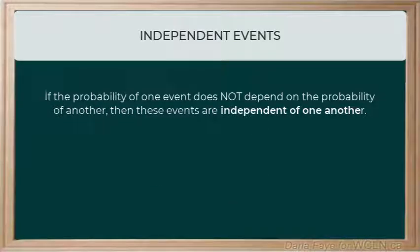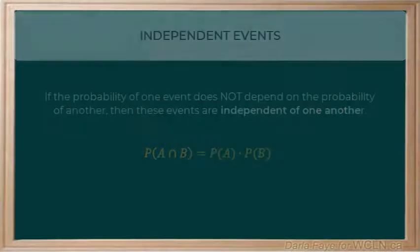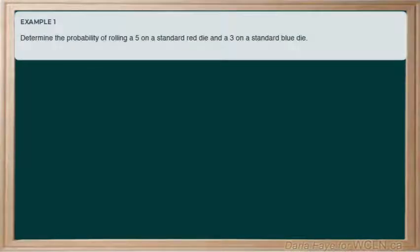To determine the probability that both independent events occur, we can use this equation. If I'm trying to find the probability of event A and event B, I would take the probability of event A and simply multiply it by the probability of event B. Let's take a look at an example that has some numbers in it.